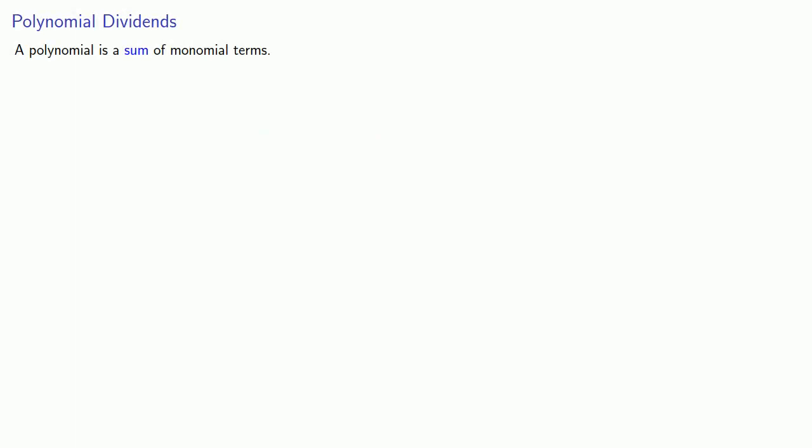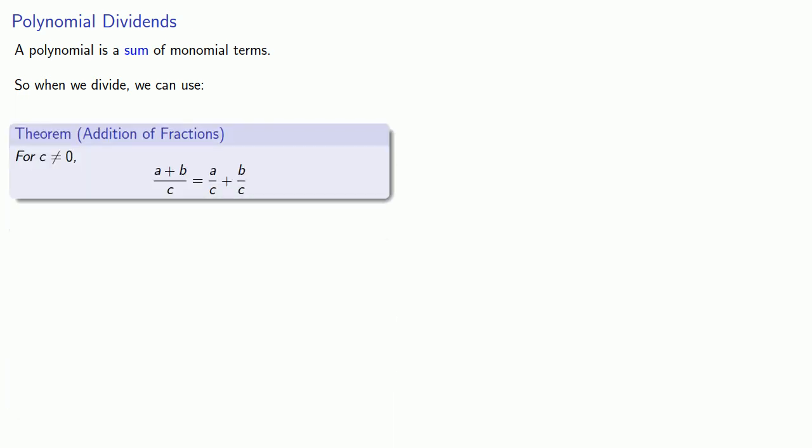We might consider what happens when we have a fraction where the numerator is a sum. This goes back to a theorem: for c not equal to 0, the fraction (a + b)/c equals a/c + b/c. We're used to reading this from right to left because this is how we add fractions—they have to have the same denominator. But we can also use it backwards to split up a fraction whose numerator is a sum.